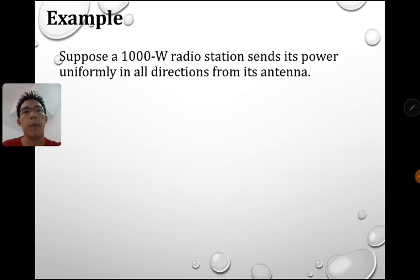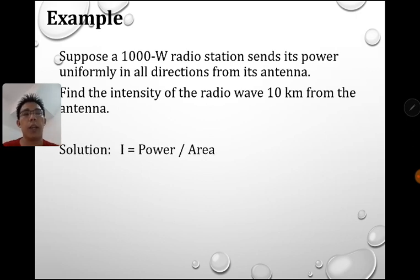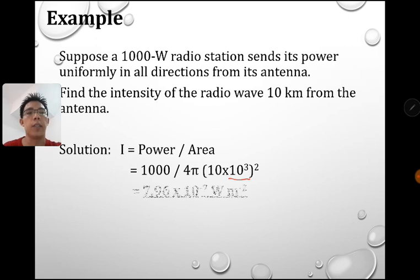So let's look at one example. Suppose we have a 1000 watt radio station, this is power. Sends the power uniformly in all direction from its antenna. Find the intensity of the radio wave 10 km from the antenna. So we start off with I equals to power per unit area. Power per unit area. And therefore, we have 1000 as the power and 4 pi R squared. So the R, we can take the distance 10 km. So change into meter will be 10 to the power of 3. And then you square that and you should be able to get the answer.